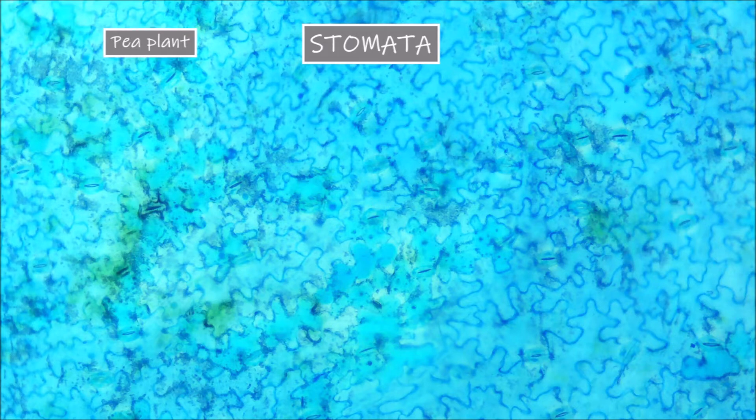The first type of leaf we are looking at is that of the pea plant, as an example of what stomata look like in dicotyledon plants. Stomata are mostly found on the bottom surface of the leaf, so this sample we are looking at is a peel of the outer layer of epidermal cells from the bottom surface of the leaf. Here on the lowest magnification you can see a whole bunch of small oval shaped structures on the surface of the leaf.